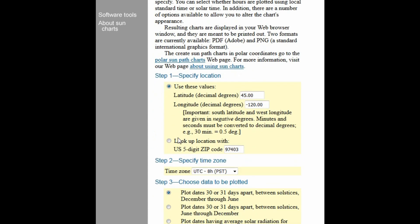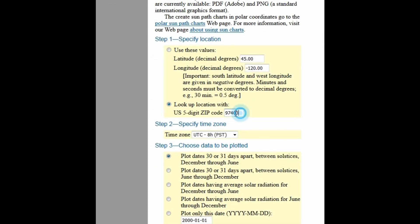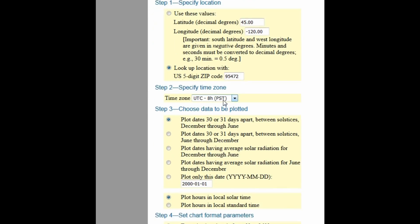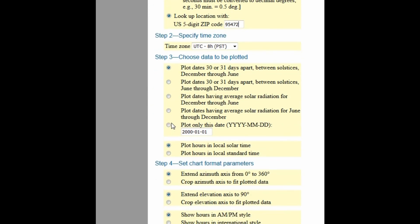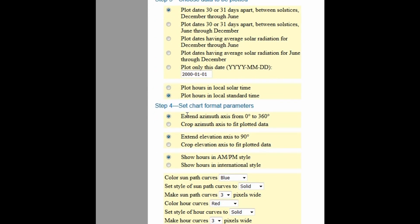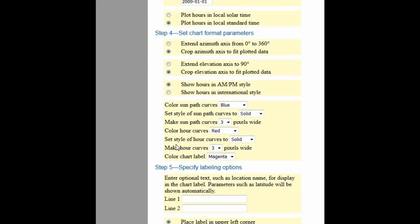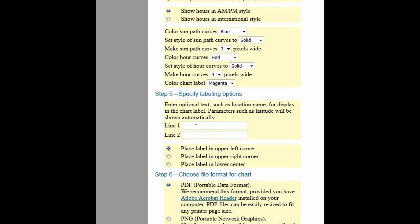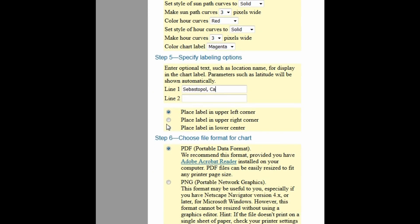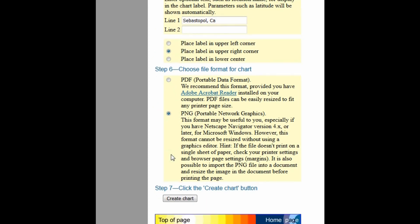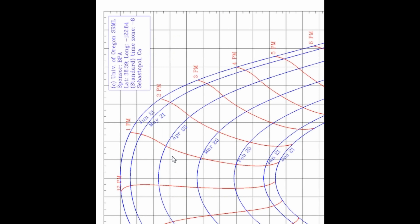To create a sun path chart for your location, you can go online to the University of Oregon's sun path chart program. First, enter your zip code. Then, enter the time zone for your location. Choose Local Standard Time, select Crop Azimuth Axis to Fit Plotted Data, and Crop Elevation Axis to Fit Plotted Data. Most of the other options, you can leave as they are. Under Labeling Options, type the name of your city and choose Place Label in upper right corner. Select either PDF or PNG for the format of your chart. Then, click Create Chart.